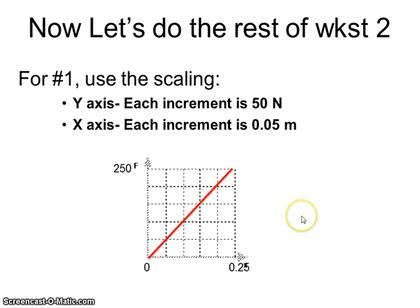So now we're ready to do worksheet number two, but the scaling on problem number one didn't come out. So we need you to scale it accordingly. So scale from zero to 250. So each increment would be 50. So 50, 100, 150, 200, 250. And in the x, increments go up by 0.05. So 0.05, 0.1, 0.15, 0.2, 0.25. And then draw a nice straight line sloped upward. Then you're able to answer the rest of the questions for number one. So the graph didn't come out in the printing.